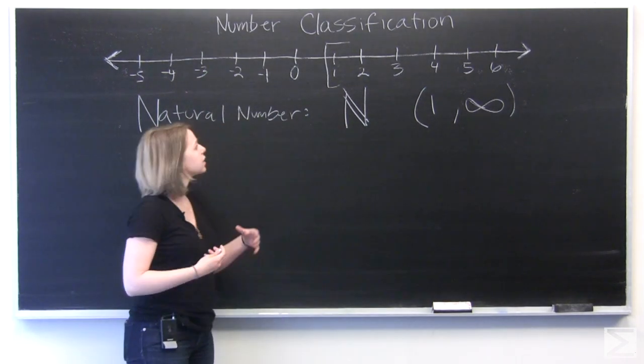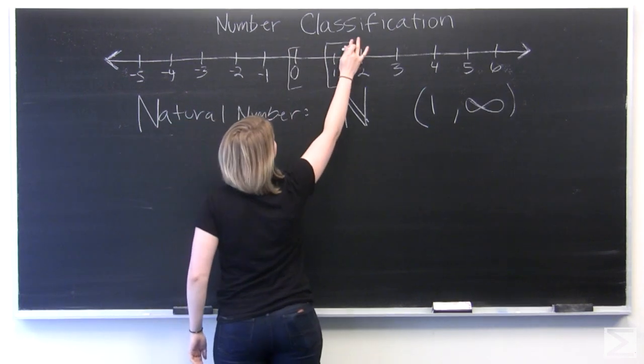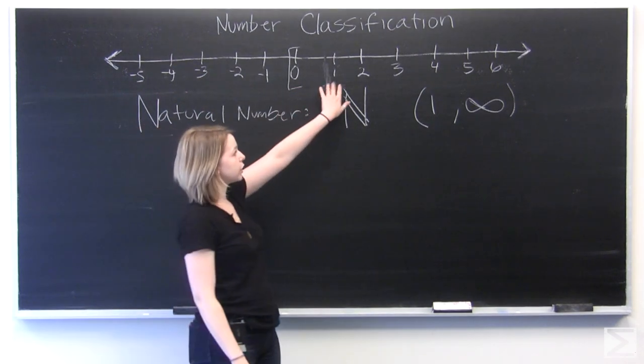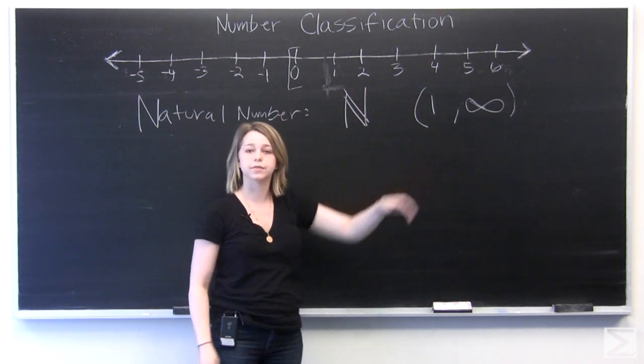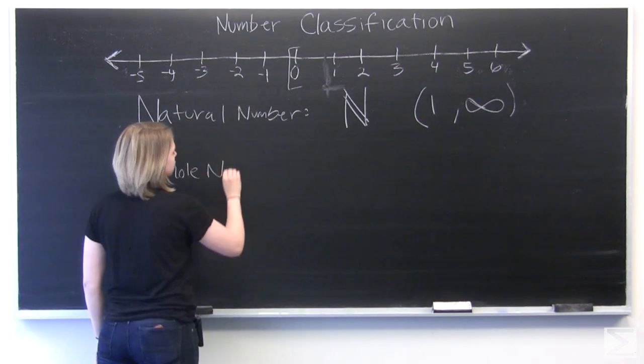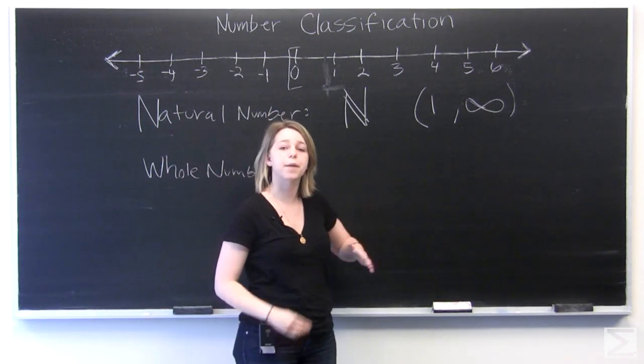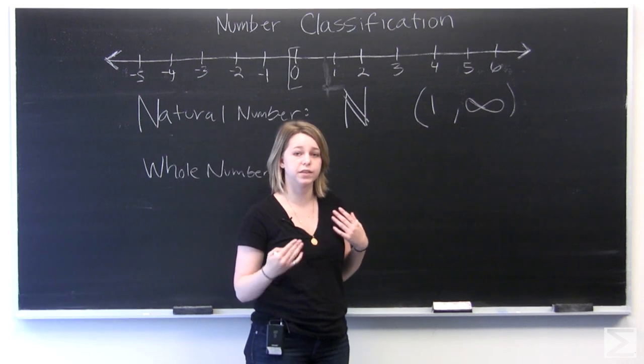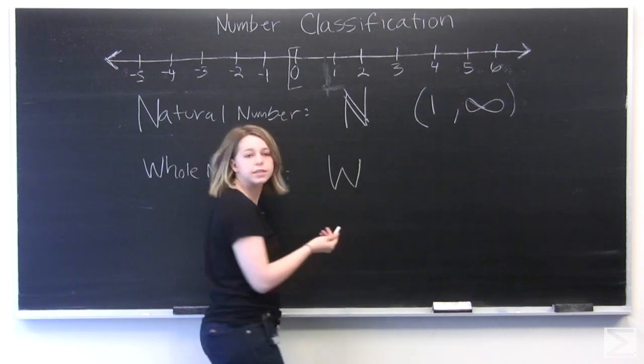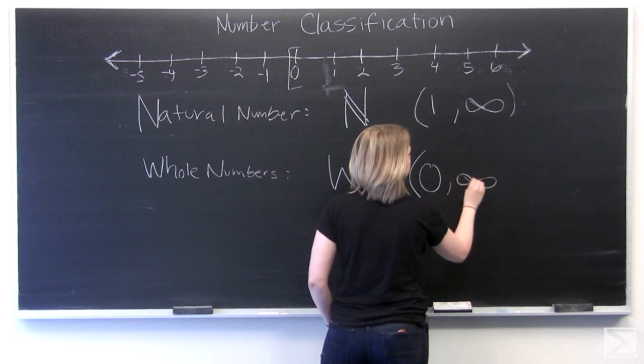Next we're going to look at including zero in our list of numbers. So we've got now zero plus one, two, three, all the way to infinity. And these numbers are called whole numbers because each is a whole step on the positive side of the number line, including zero. And the symbol we use to represent those is W. And they are from zero to infinity.